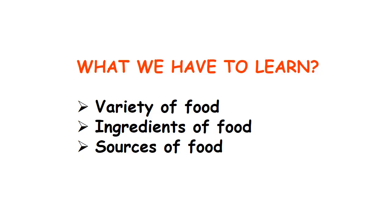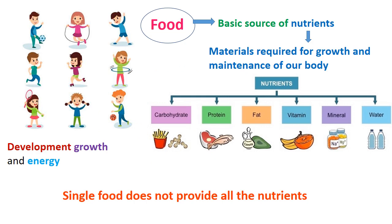Today we are going to discuss what we have to learn about variety of food, ingredients of food, and sources of food. As you know, for different activities energy is very essential, such as running, reading, walking, and exercise. Energy is required to carry out different activities, and the materials required for growth and maintenance of our body are called nutrients.